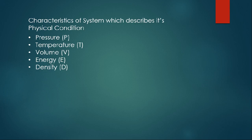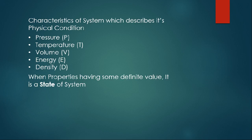Consider a system in which the pressure is 1 kg per centimeter square and the temperature is 100 degrees Celsius. Another state is when the pressure is 2 kg per centimeter square and the temperature is 200 degrees Celsius. When these properties have some definite value, it is called a state of a system.